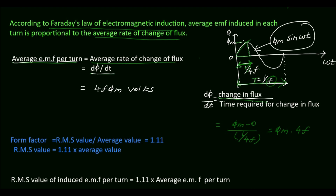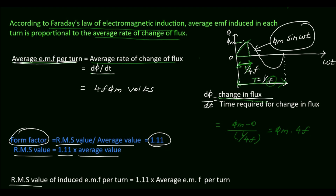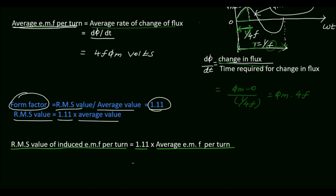Since the flux is sinusoidal, the induced EMF in both the primary and secondary windings is also sinusoidal. For a sinusoidal quantity we need to find the RMS value. The form factor is equal to RMS value divided by average value, which equals 1.11. So from this, the RMS value is equal to 1.11 times the average value. So far we have derived the expression for average EMF per turn; now we find the RMS value of induced EMF per turn. The RMS value is equal to 1.11 × 4f·φm, which equals 4.44f·φm. So 4.44f·φm is the RMS value of induced EMF per turn.